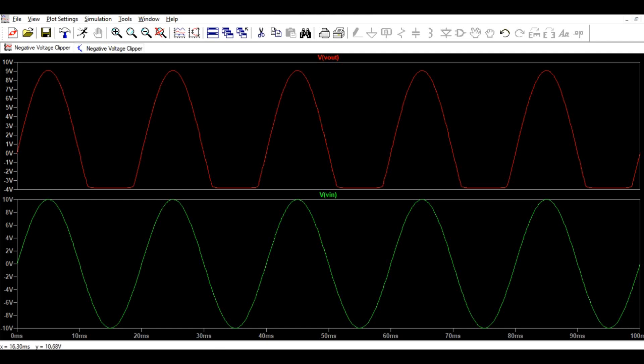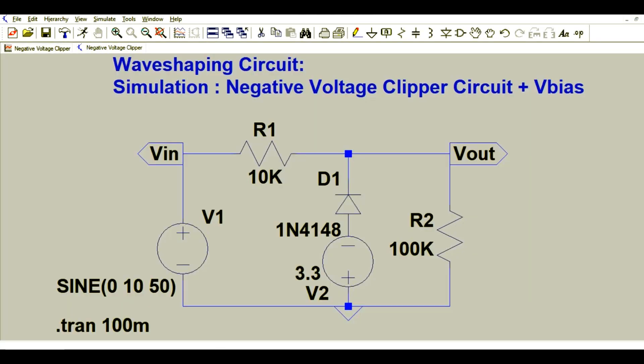Okay, so that's all for a negative voltage clipper circuit with bias voltage. I see you in next lecture.